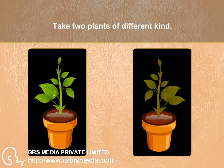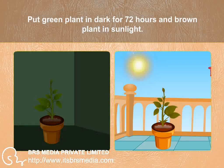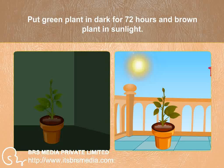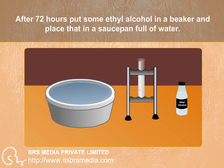Take two plants of different kinds. Put the green plant in dark for 72 hours and the brown plant in sunlight. After 72 hours,